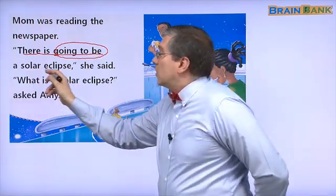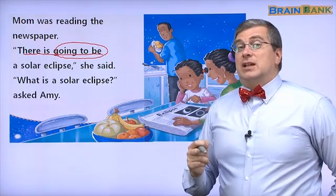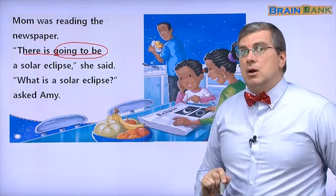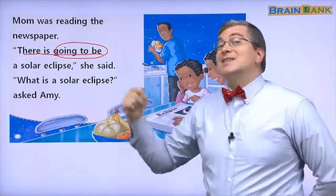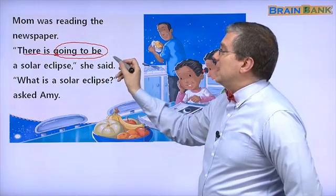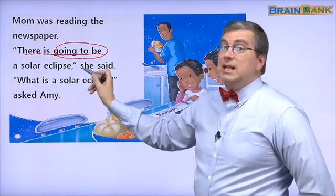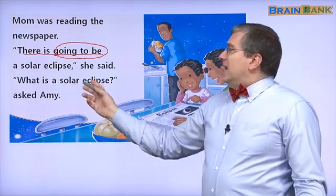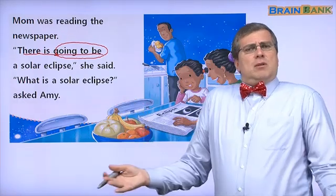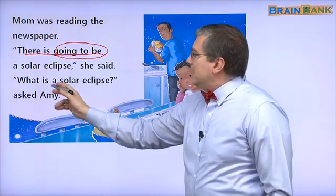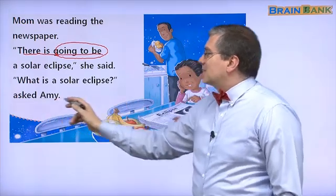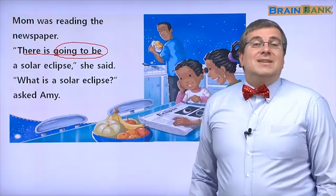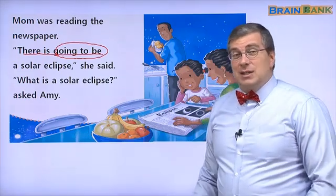A solar eclipse — 일식 있어요, right? Will come. So that's very interesting. 보고 싶어요. I want to see it. 'There is going to be a solar eclipse,' she said. 'What is a solar eclipse?' — 일식 몰라요, right? — asked Amy. Here is Amy. She doesn't know what a solar eclipse is. Do you know? Let's find out.